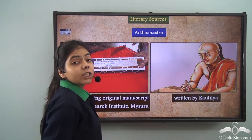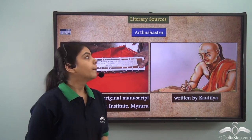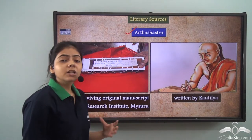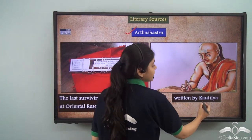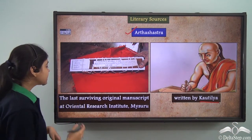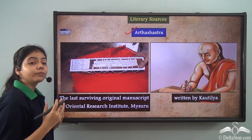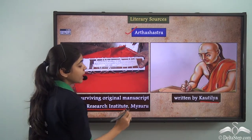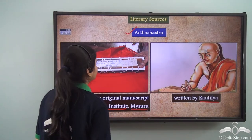Another major source from which we get to know about the Mauryan Empire is the Arthashastra. The Arthashastra was written by Kautilya, and the last surviving original manuscript is found at the Oriental Research Institute, which is located at Mysuru.